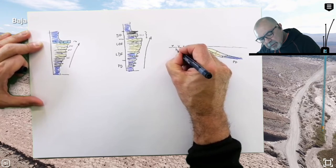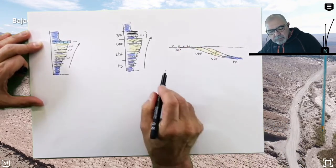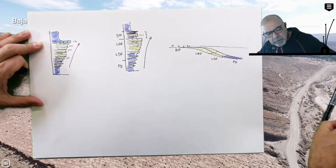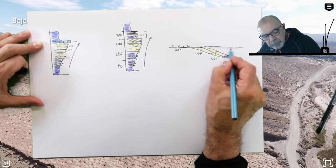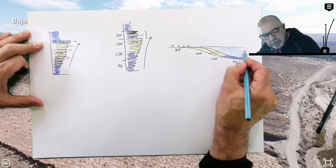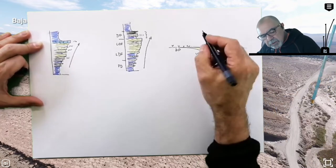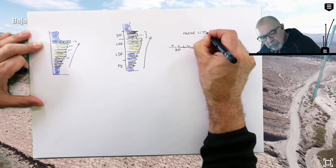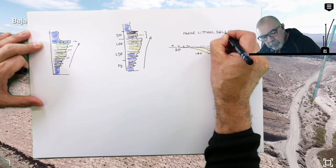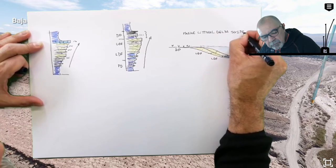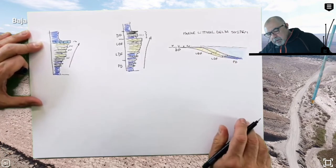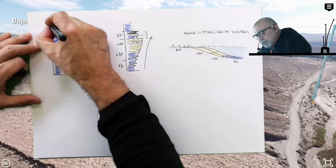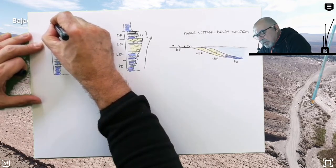And then we have here delta plane. So this progradation here is the result of sediment supply in a marine littoral delta. So in contrast, this kind of progradation many geologists call parasequences.